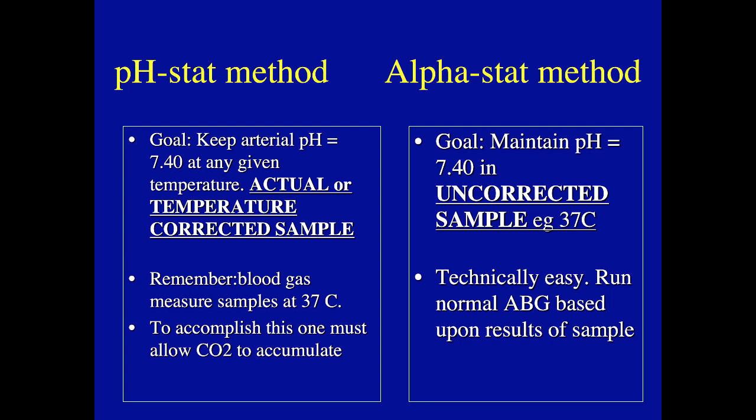Let's rehash this — it's a concept easy to lose. For the pH stat method, the goal is to keep pH 7.4 and pCO2 of 40 at any given actual temperature using a temperature-corrected sample. Sometimes you must actually add CO2 to compensate for the increased solubility of CO2, adding more CO2 content to bring the partial pressure up.